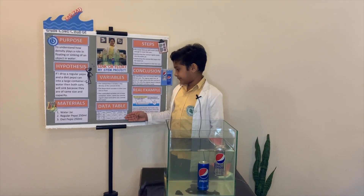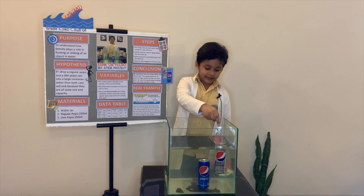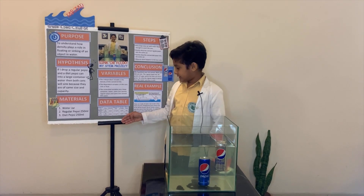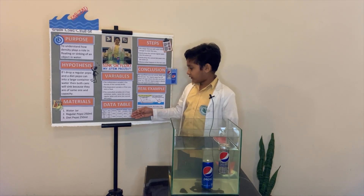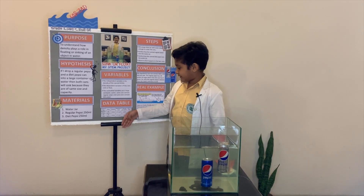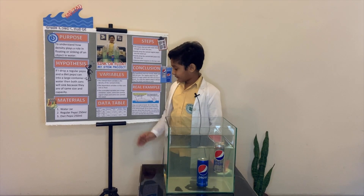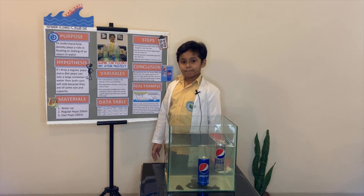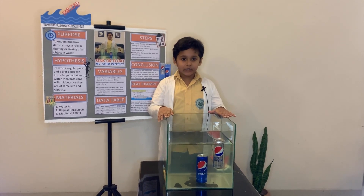Now let's describe the data table. I used two types of cans. One is regular Pepsi, another one is diet Pepsi. The mass of the regular Pepsi is 267 grams and the diet Pepsi is 245 grams. The volume of both cans is 250 ml. The density of the regular Pepsi is 1.07 grams per ml.